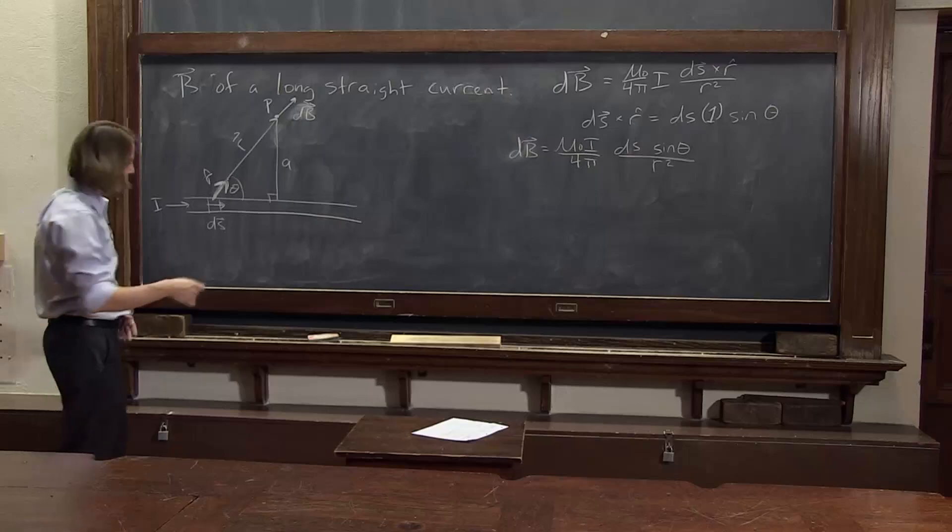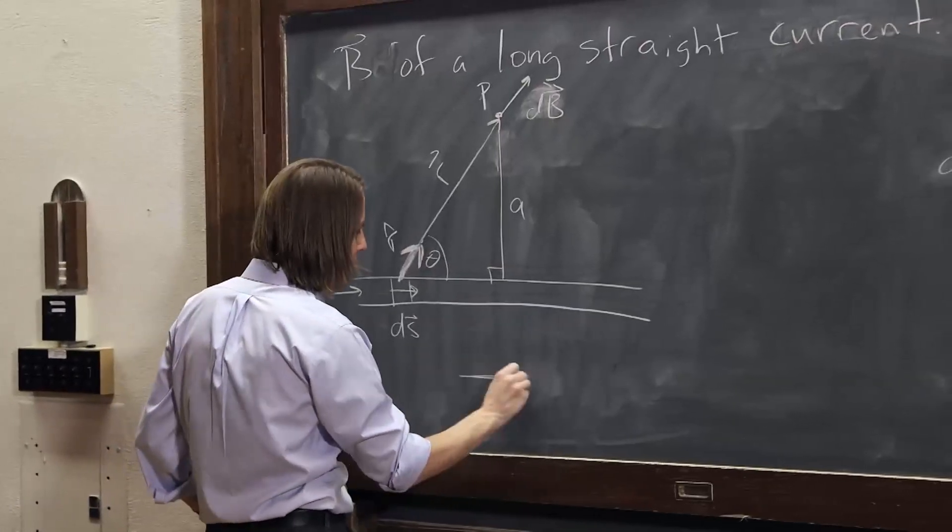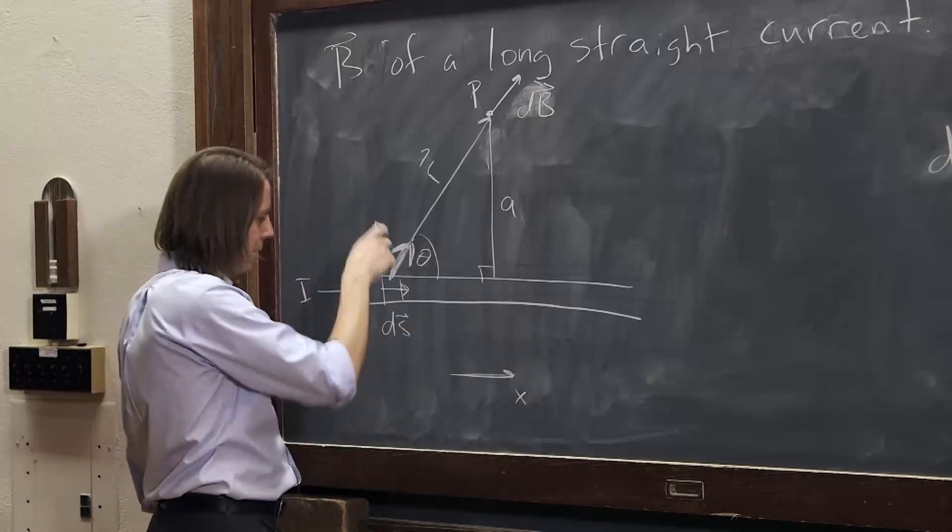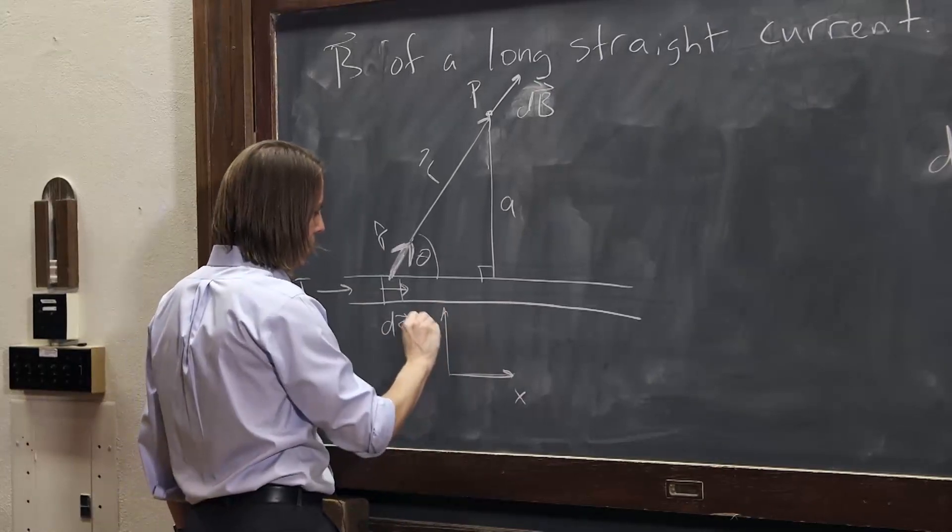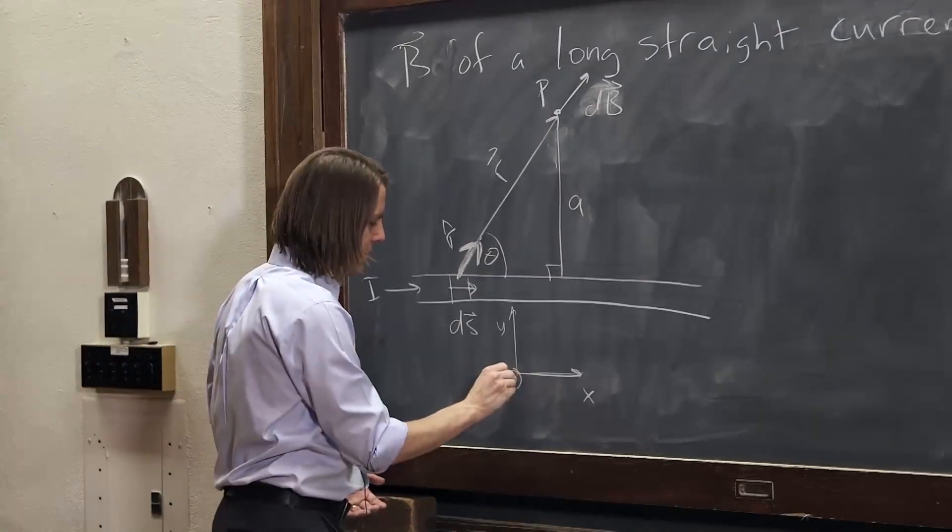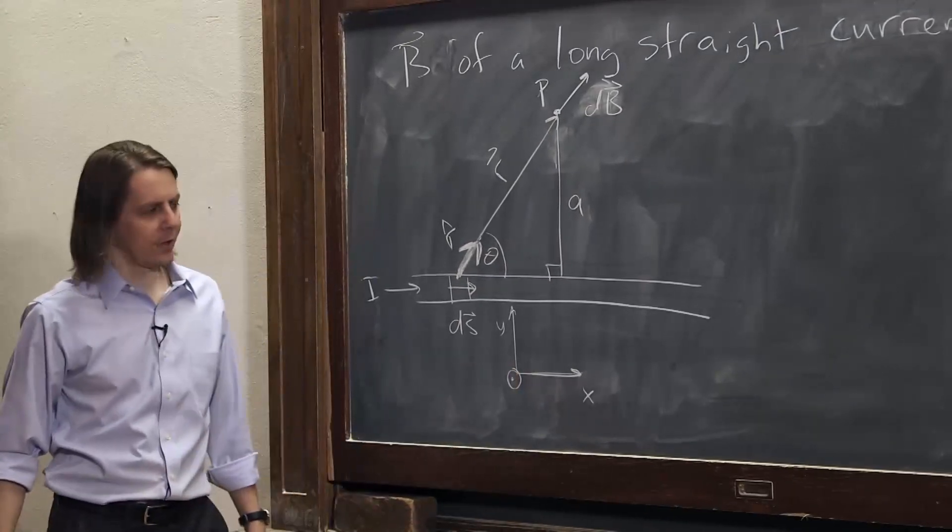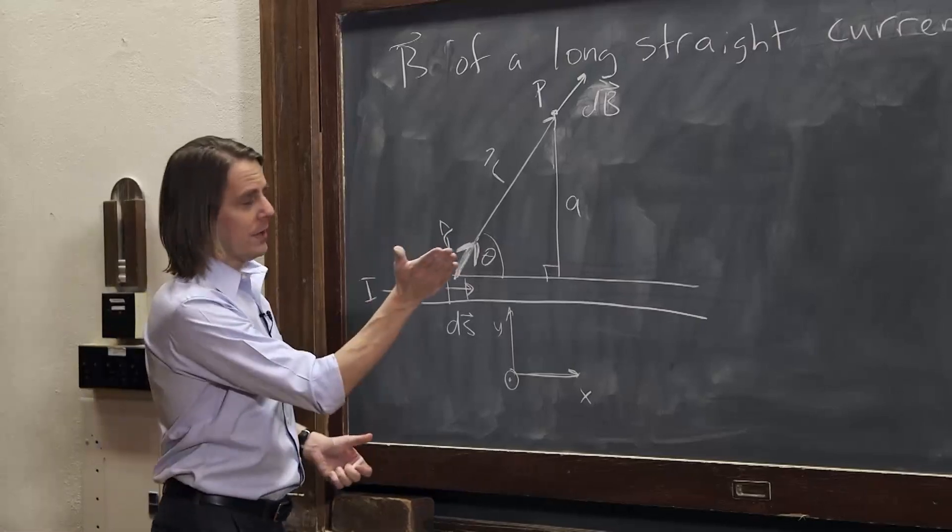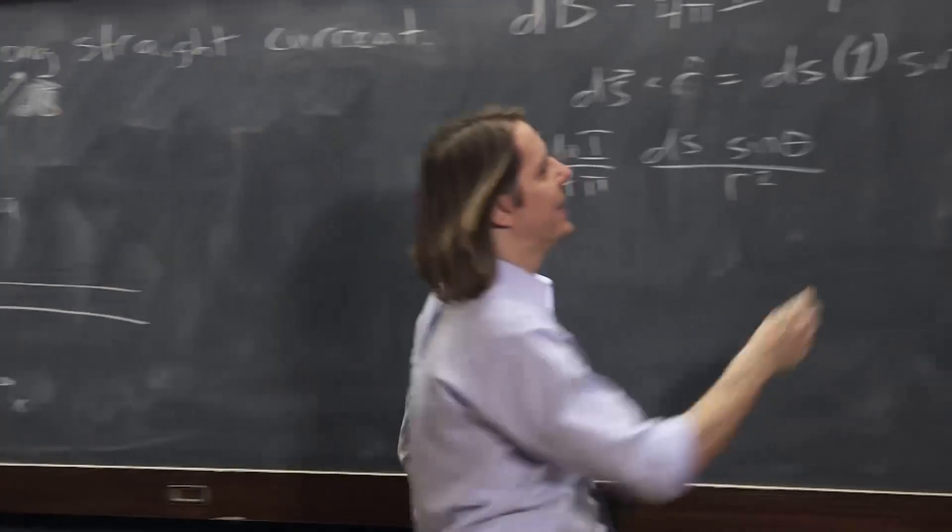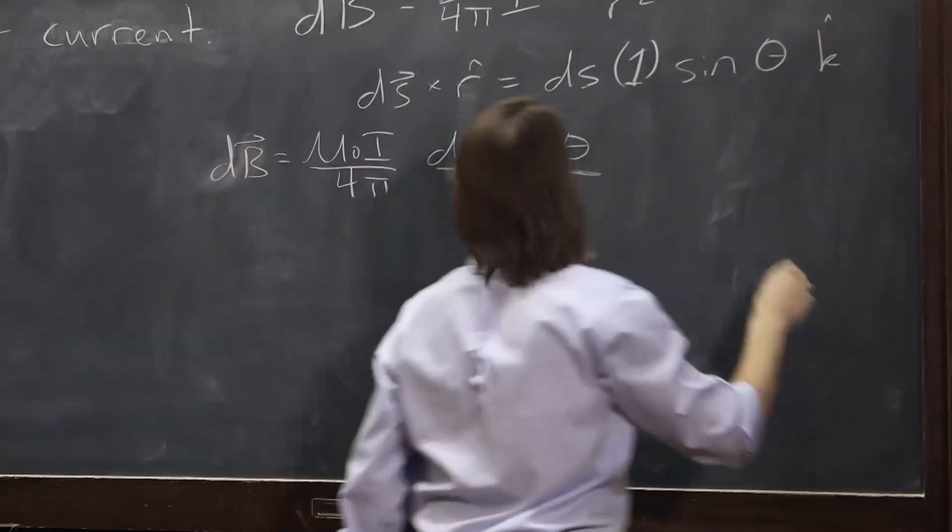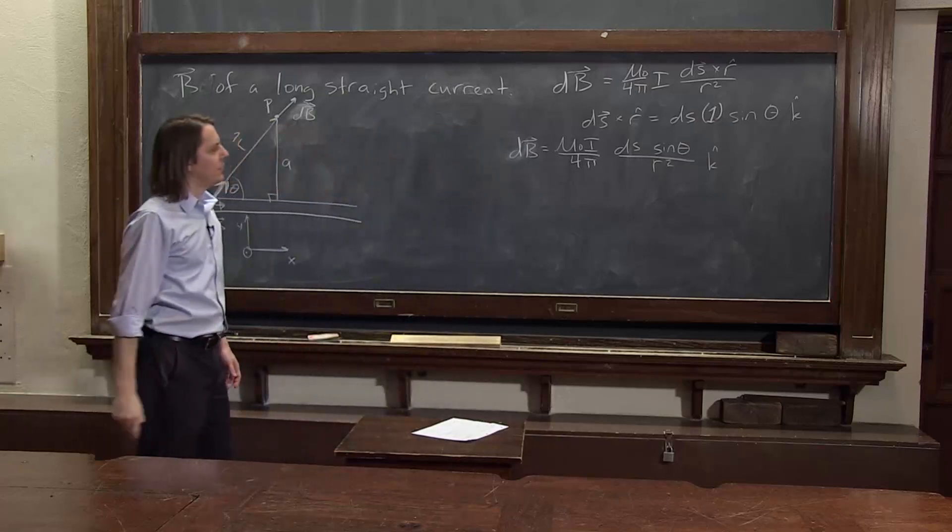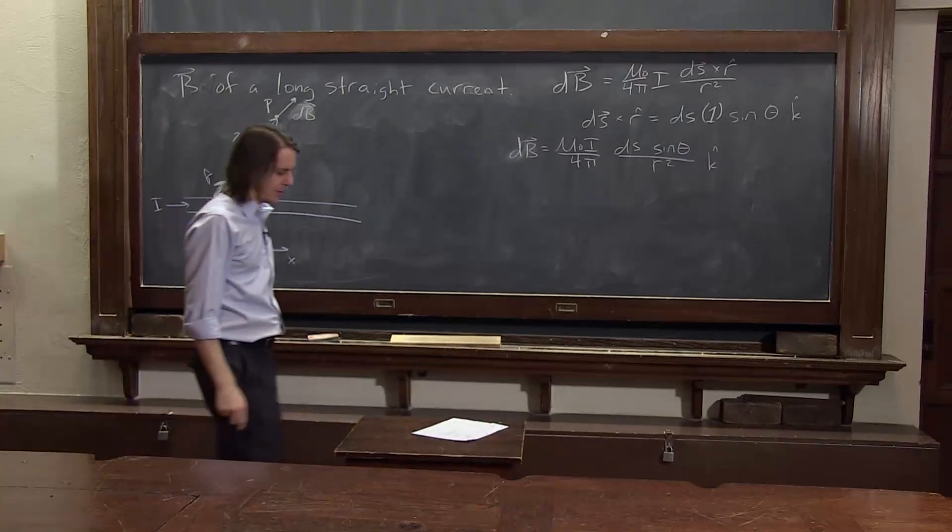So let's set up a coordinate system. There's the x direction, we'll say, is along the wire along ds. There's the y. And x cross y is out, so this z must be out of the board. So our ds cross r̂ sticks out of the board. So there must be a k̂ on here. And therefore, there must also be a k̂ on there. So that is our dB. And it's a vector, like it should be.